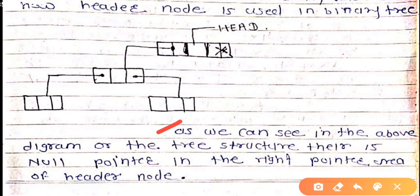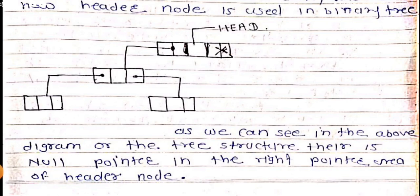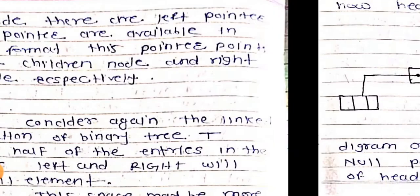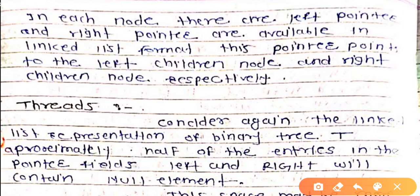As we can see in the above diagram of the tree structure, there is a null pointer in the right pointer area of the header node - that is, here it is null. In short, this header node points to the first node of the tree, that is the root node. The header node tells us where the tree starts.